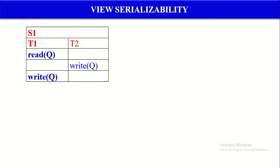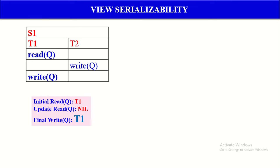Let us take one more example to discuss View Serializability. This is the given Non-Serial Schedule, where there are two transactions performing operations on a single Data Item Q. We check which transactions perform Initial Read, Update Read, and Final Write on Q. Who performs the Initial Read on Q? T1. Update Read: no transaction performs it, because after the Write there is no Read operation — so it is nil. The Final Write on Q is performed by T1, as there are two Write operations but the final one is by T1.